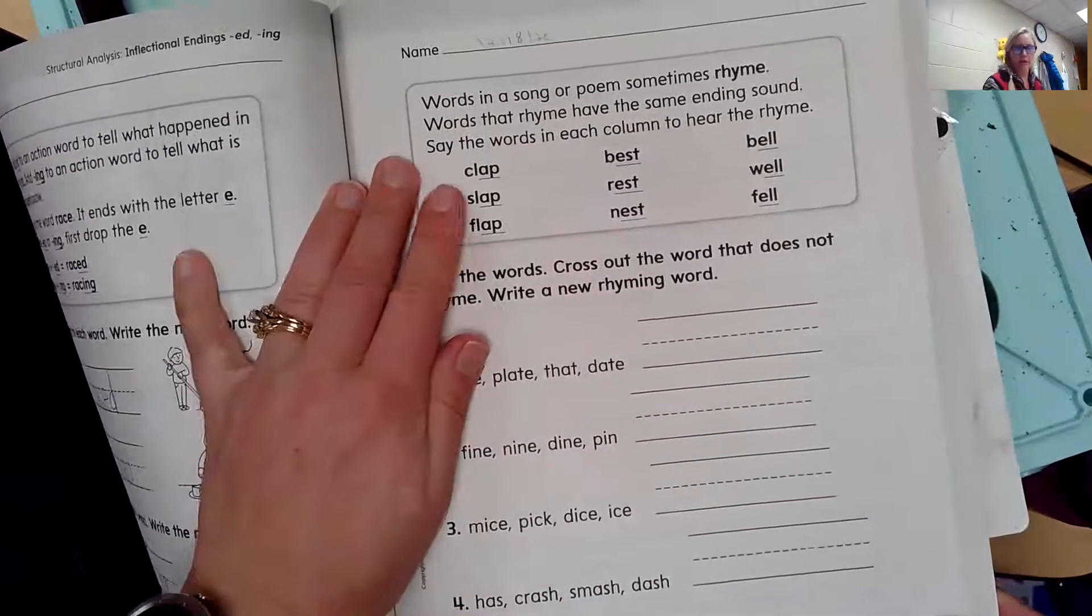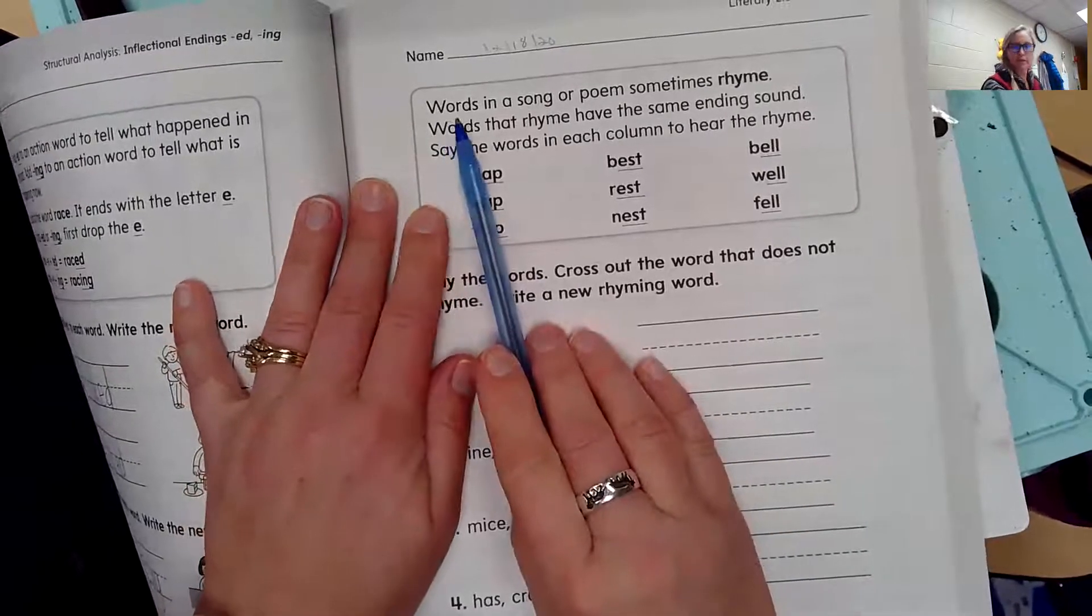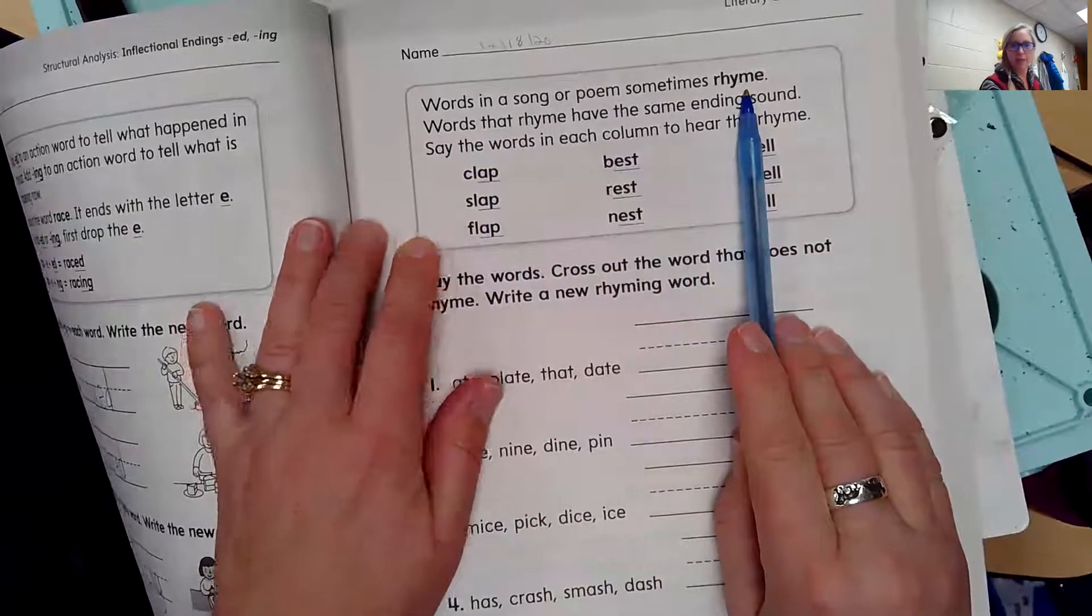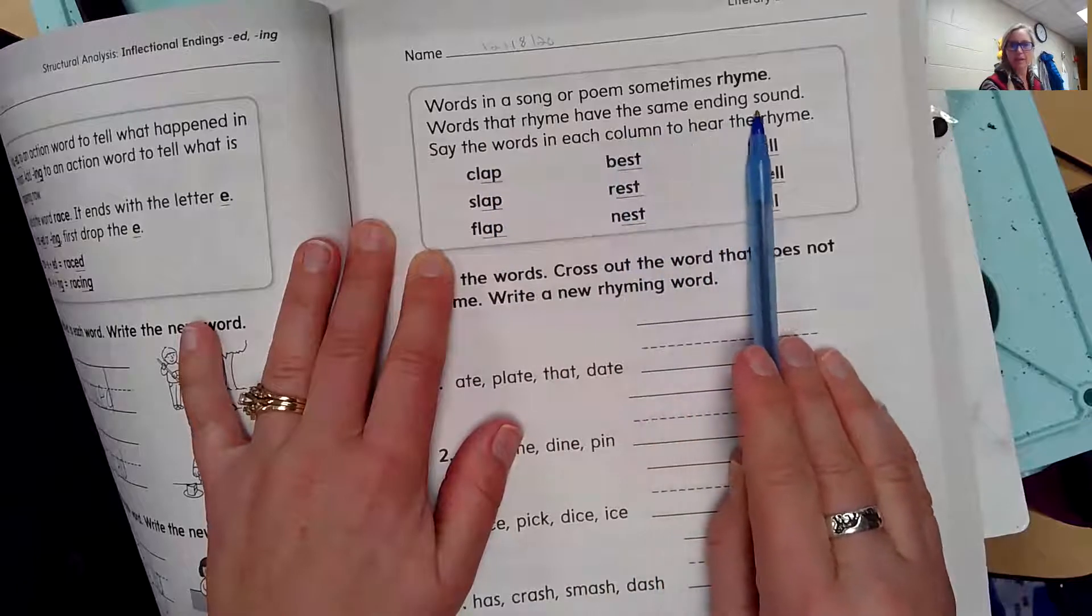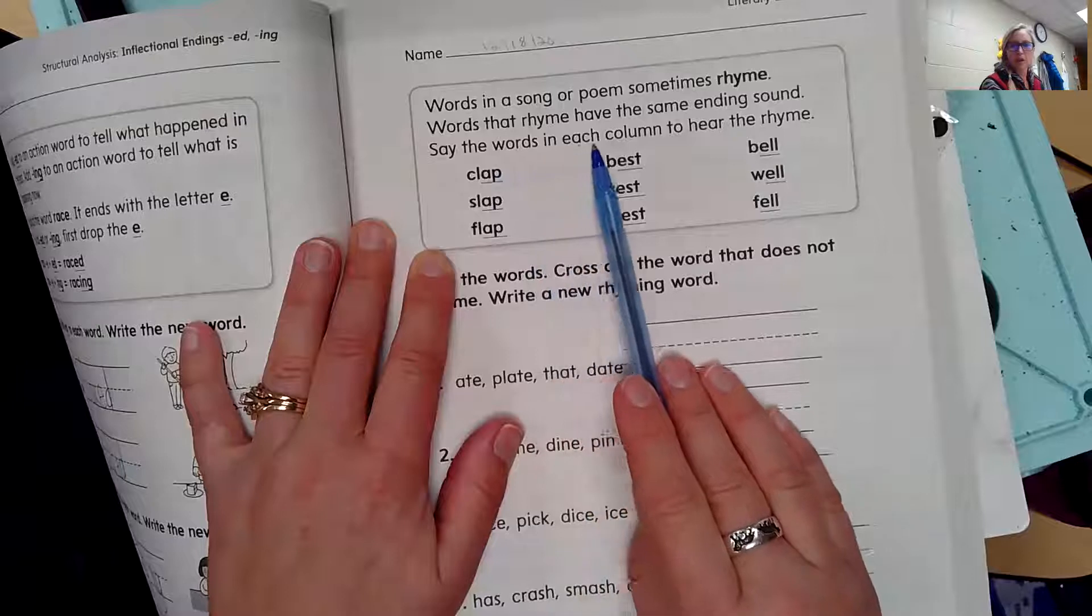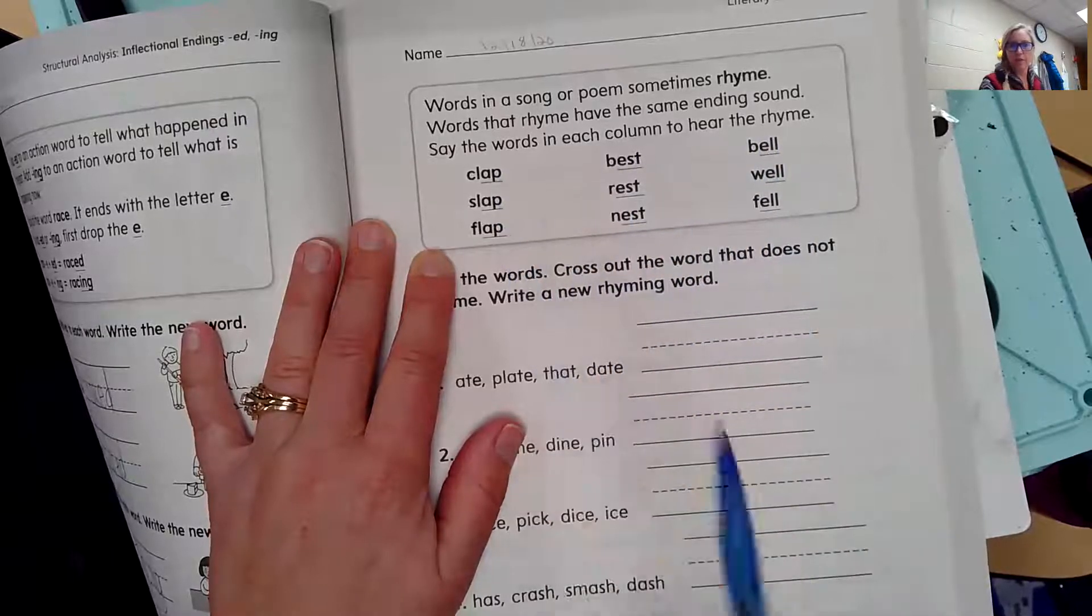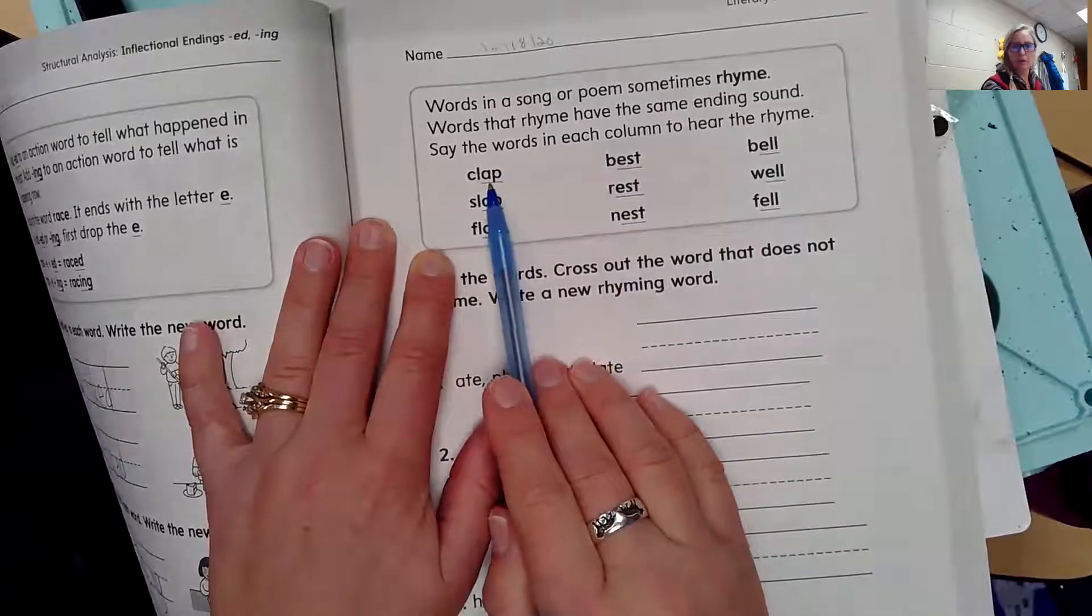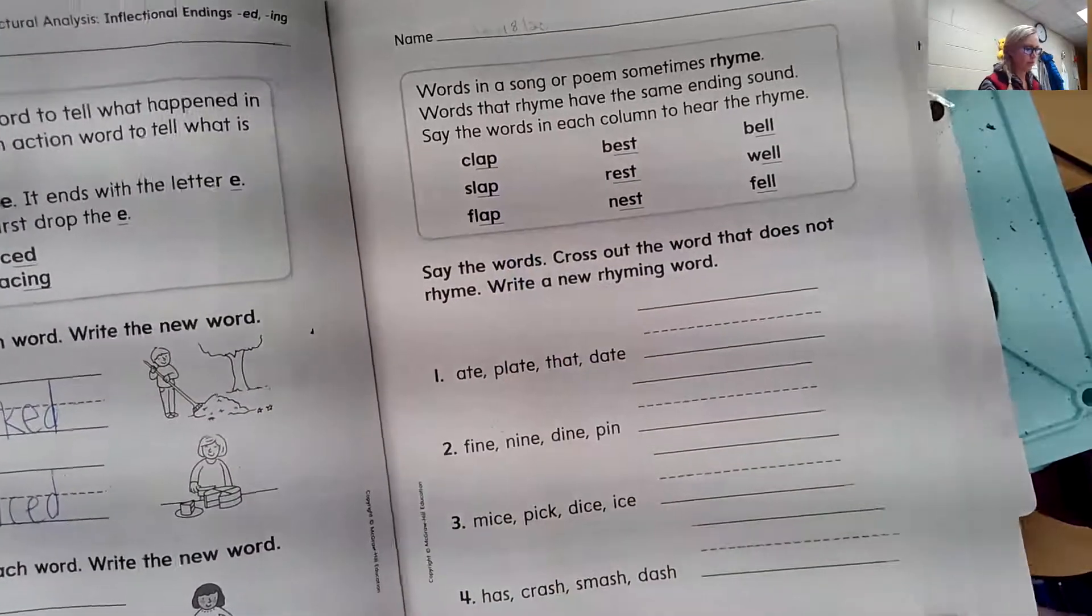Let's take a look at our directions. We're working on rhyming words on this paper today. It says words in a song or poem sometimes rhyme. Words that rhyme have the same ending sound. Say the words in each column to hear the rhyme. Notice that they've already underlined for you the rhyming part.